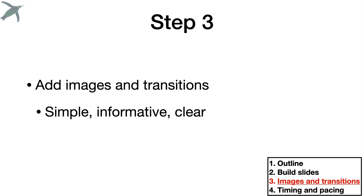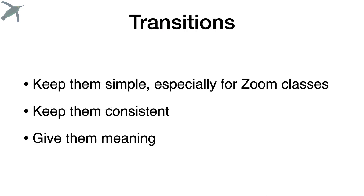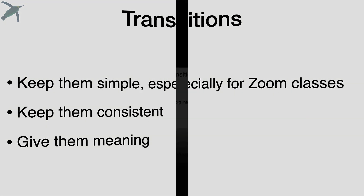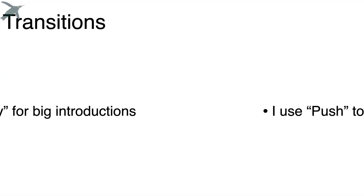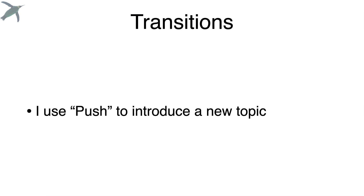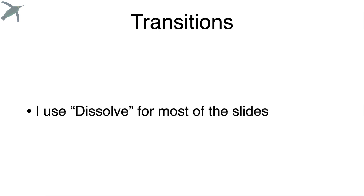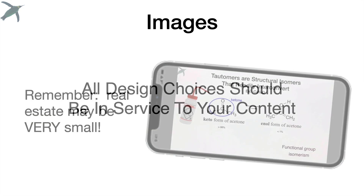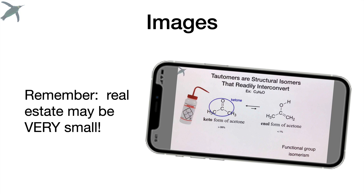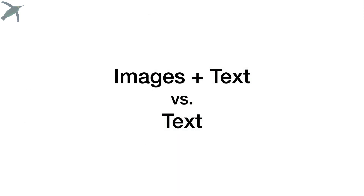Step three: images and transitions. I like to keep everything simple and clear, especially for Zoom. Don't make your transitions too complicated, and give them meaning. I use Doorway for big introductions, Push or sometimes Grid to introduce new topics, and for most slides I just use Dissolve. As far as images go, keep in mind that all design choices should be in service to your content, and real estate might be very small — images and text versus text alone.